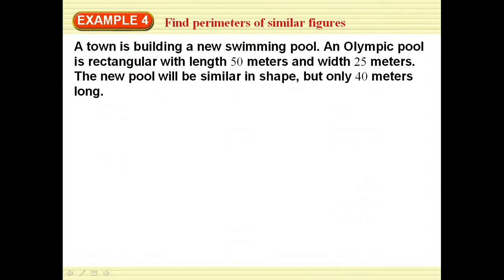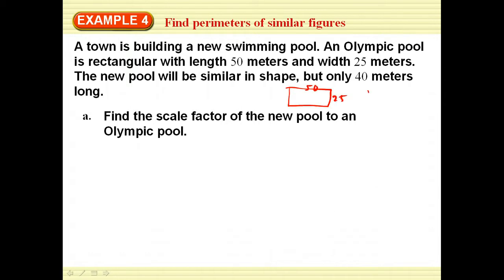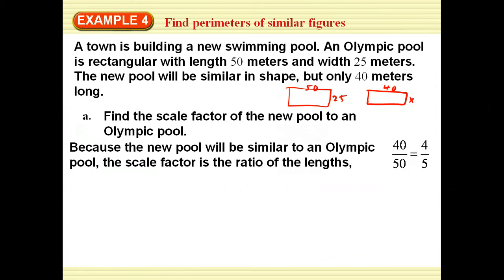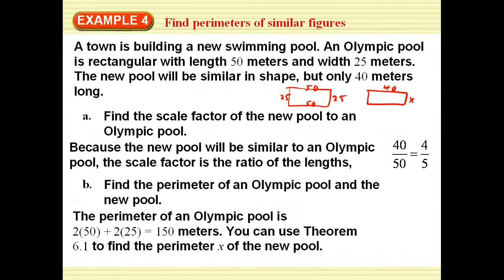This is a town building a new swimming pool. An Olympic pool is rectangular with length of 50 meters and 25 meters. The new pool is going to be similar, but only 40 meters long. Find the scale factor of the new pool to the Olympic pool. We've got one big pool that is 50 by 25. We have one that is a little smaller, only 40 feet long. We don't know the width yet, but we want the scale factor. So I pick my corresponding sides, and so the 40 over 50 reduces to 4 to 5. So I have a scale factor of 4 to 5.